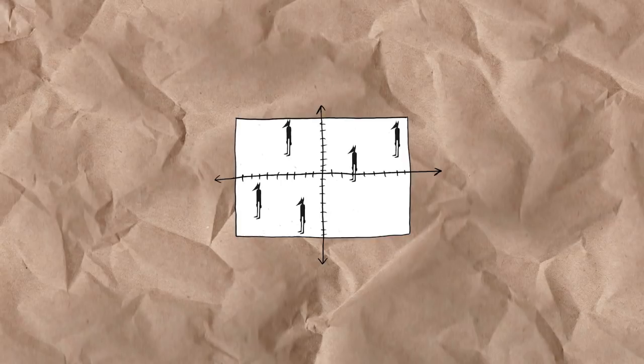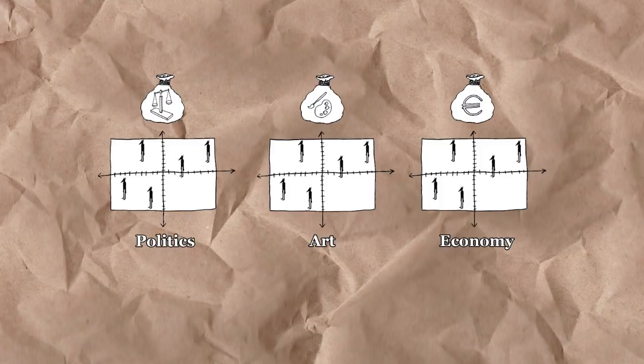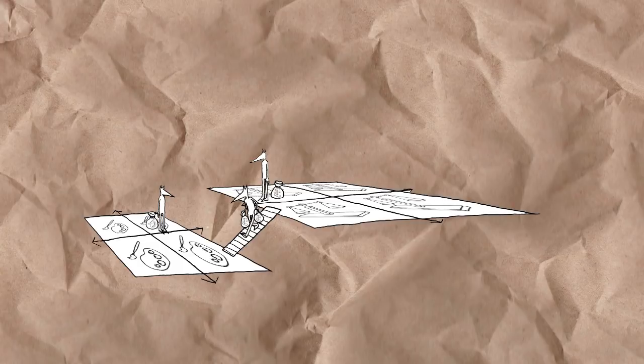Different forms of capital are valued differently in different fields. For example, political capital is specific to the political field, artistic capital to the artistic field, and economic capital to the economic field. Fields are never completely autonomous from each other and are structured by their relation to other fields, primarily the field of power.